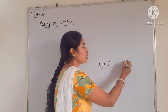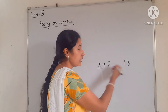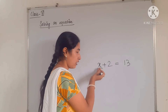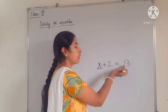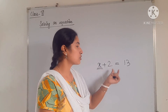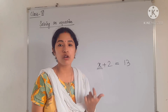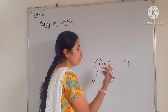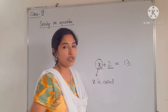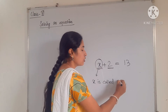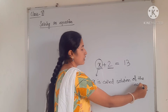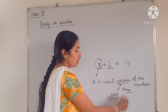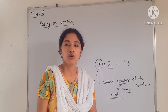By adding 2 to the age x, we get 13, so we write x plus 2 equals 13. The value of x is called the solution of the equation. We know 2 and we know 13, but x is unknown. The solution is also called the root of the equation — solution and root mean the same thing.